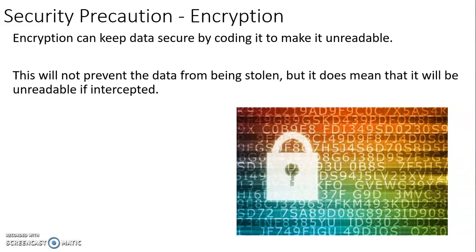We also need to know about encryption. Encryption can keep data secure by coding it to make it unreadable. It won't prevent the data from being stolen, but if someone gets that data who shouldn't have it, it'll be unreadable because it's been encrypted — changed into an unreadable code — so they won't actually know what the data is.